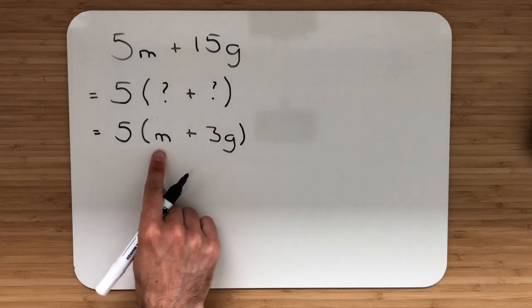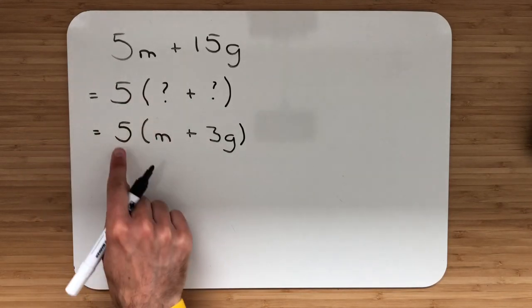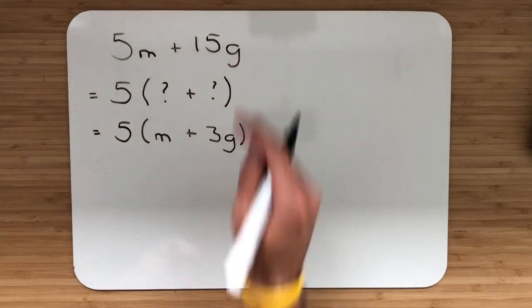Break it back out in your head. 5 multiplied by m, 5m. 5 multiplied by 3g, 15g. Perfect.